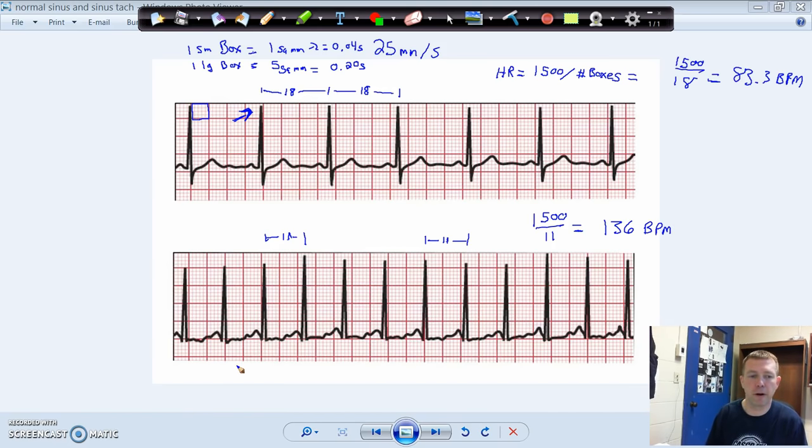So that's the easiest way to figure out heart rate. Count the number of boxes in between the same event on two adjacent cardiac cycles. Easiest one to use is the R wave. It makes this great peak for us to identify. Count the number of boxes in between, count the number of small boxes in between. 1,500 divided by the number of boxes is going to equal your heart rate.